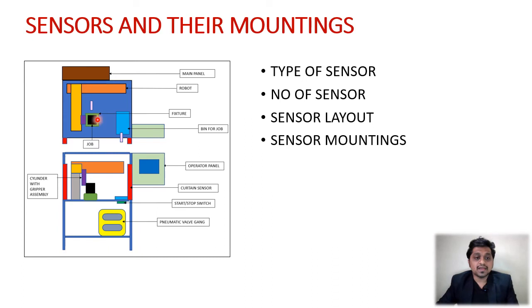Then the job will be placed here, so for presence—whether the job has been placed on the fixture or not—we will require one sensor. Then again it will move to this location and it will place the job over here in the bin, so here again you will require one kind of sensor for sensing the part.